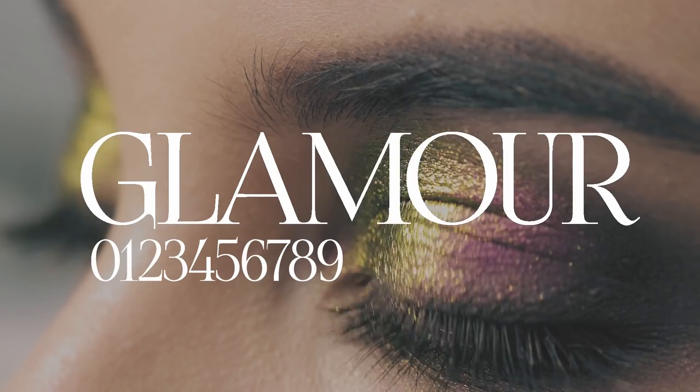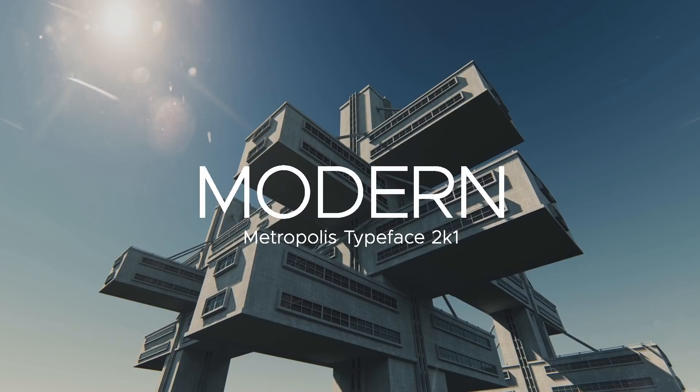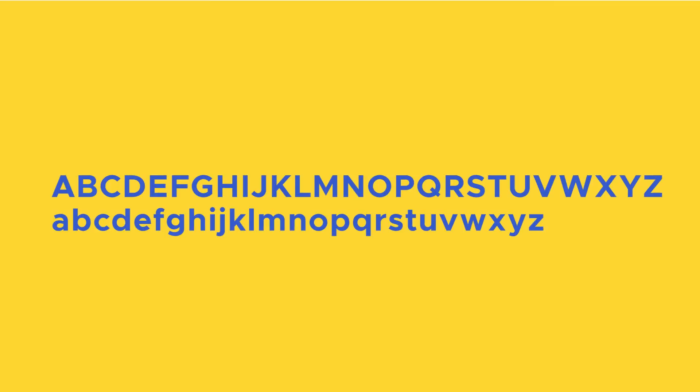Next we have another sans-serif typeface called Metropolis, downloadable in 18 different fonts totally for free — a lot of bang for your buck. It's a really clean sans-serif typeface; I personally see these letterforms as very modern and geometric. As soon as I saw it I made sure to grab it. It's available in both upper and lowercase, so don't sleep on Metropolis — give it a download.